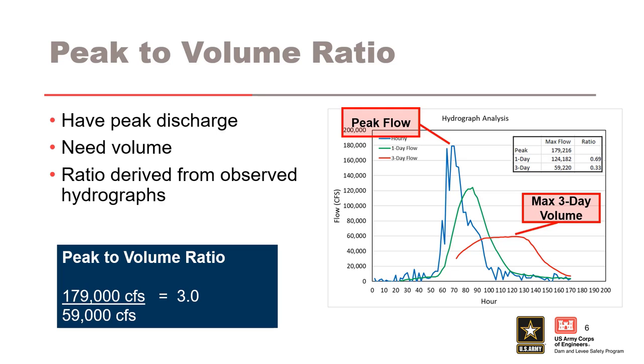In most cases, historical flood records will be reported or modeled as peak flow. In this case, you will need to convert peak flows to an equivalent critical duration volume. This is done by examining observed hydrograph shapes. This plot shows the 2015 flood event for Blakely Mountain Dam. The peak flow of the observed event is 179,000 CFS.